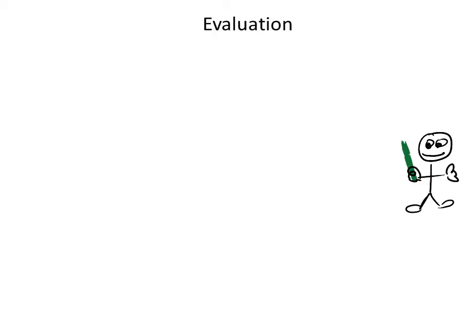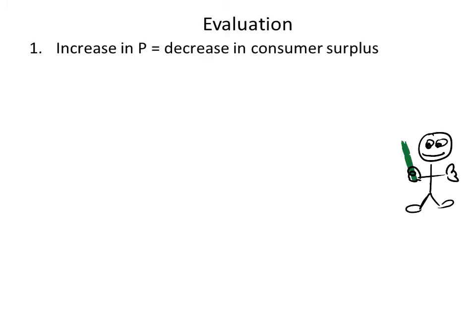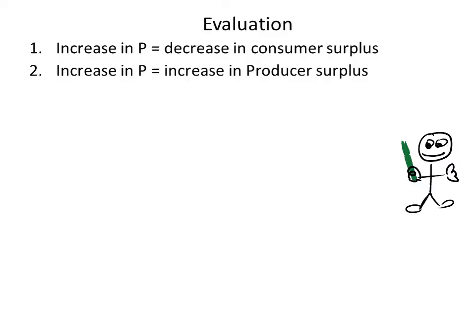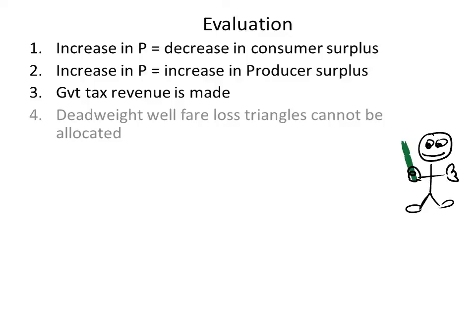Evaluation. There are eight evaluation points. One: increase in price leads to a decrease in consumer surplus. Two: increase in price leads to an increase in producer surplus. Three: government tax revenue is the revenue from tax — M2 times T, which is shown as the yellow shaded area. Four: deadweight welfare loss — the two triangles. It goes to nobody; it is that part of the welfare which cannot be allocated to anybody post tariff.